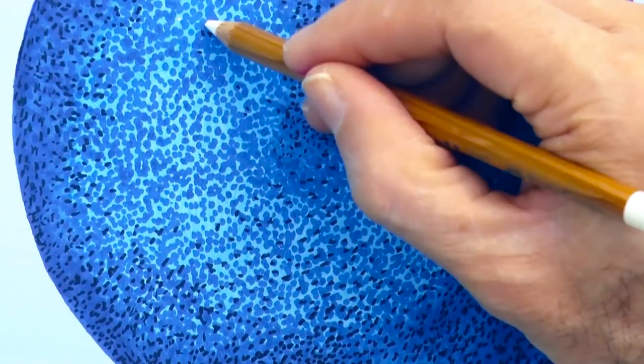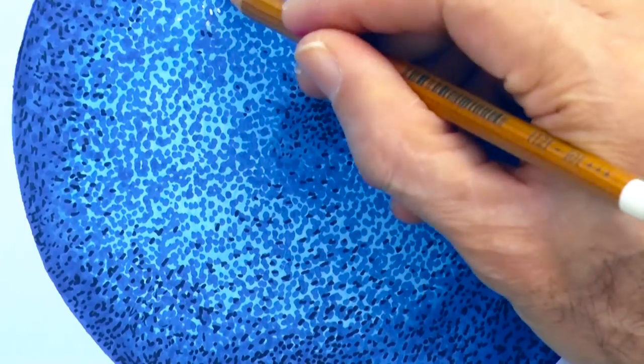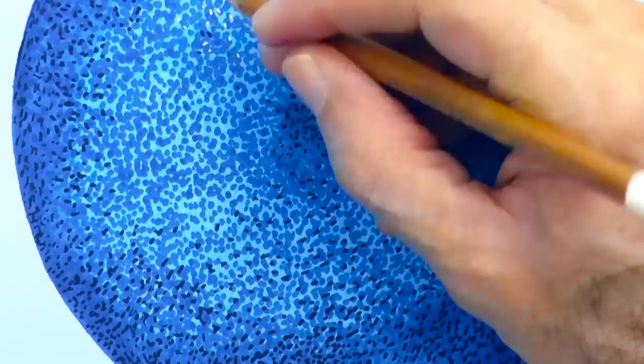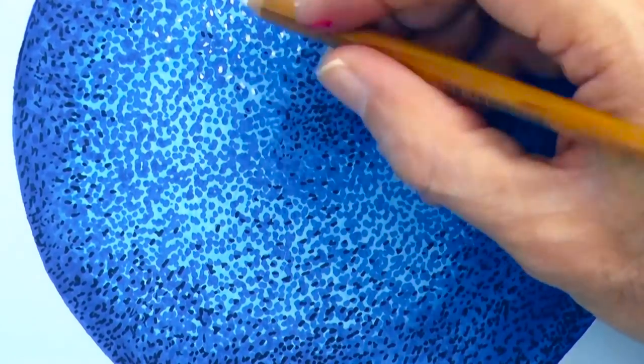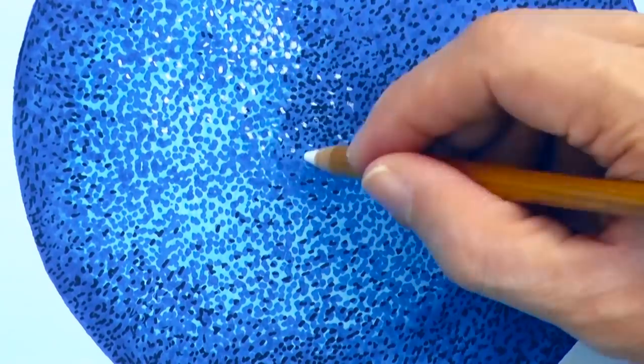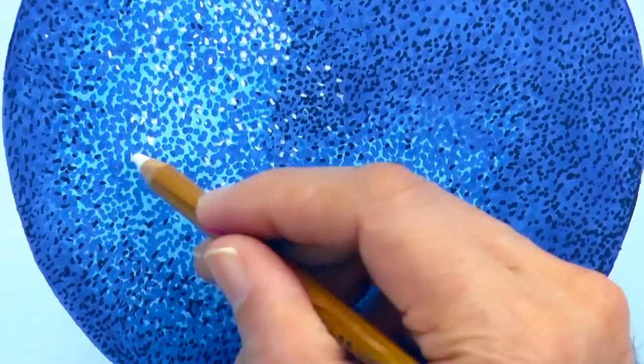And now with a white pastel pencil, let's add some reflections. Pretty much in the same manner, with dots. Of course we do them mainly on the lighter area.